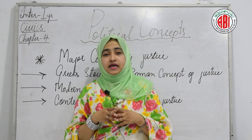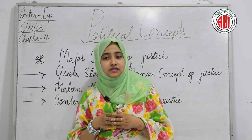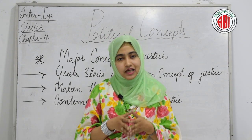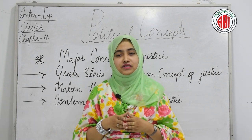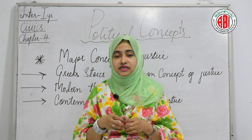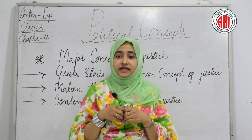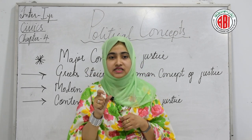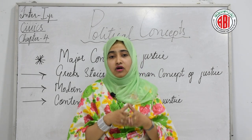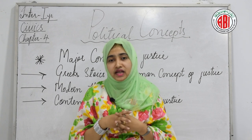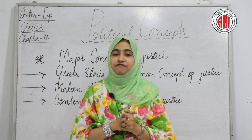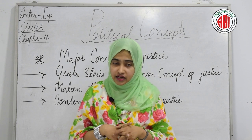The modern theory of justice emerged with the social contract theories of Hobbes, Locke, and Rousseau, also after the movements of Reformation, Renaissance, and the Industrial Revolution. Hobbes identified justice with the absolute sovereignty of the state, whereas Locke identified justice with natural rights, and Rousseau identified justice with the general will.